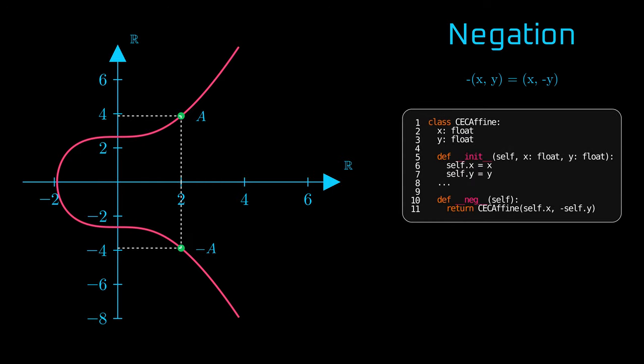And here's how we could implement this operation in Python. First, we need a class which stores x and y coordinates as floats. We'll call it CCAffine, which stands for continuous elliptic curves, affine coordinates, which is exactly the type that has x and y. We'll have a very simple constructor that will initialize coordinates with passed arguments. Last but not least, we'll overload the negation operator, the one that will be called when we put a minus in front of a variable. It will return a new instance of CCAffine with the same x-coordinate, but the y coordinate negated.